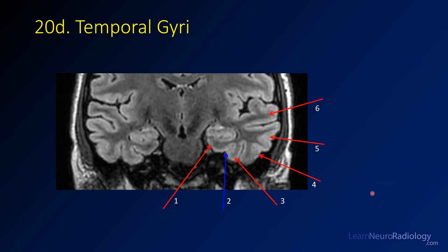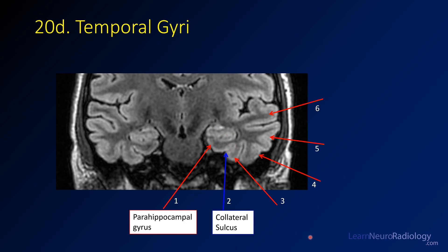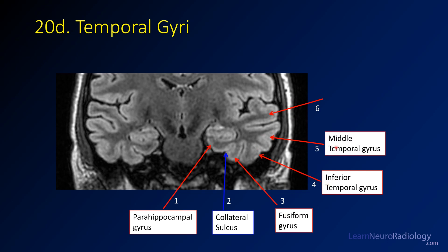Now we'll move to the coronal visualization of the temporal lobe. These structures are named starting medially and then rotating around. This one is the parahippocampal gyrus, which makes sense because it's closest to the hippocampus. In blue, we have a named sulcus you should probably know — this is the collateral sulcus. The next gyrus is the fusiform gyrus. And then these three, much like the frontal lobe, are very intuitively named: the inferior, middle, and superior temporal gyri.